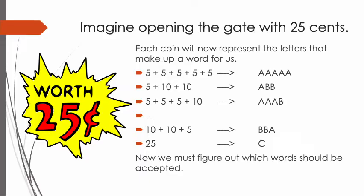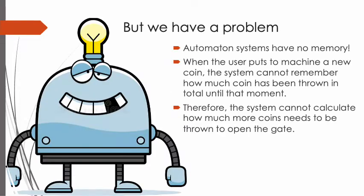Now we must figure out which words should be accepted. But wait — we have a problem. You cannot use traditional programming methods here, because automaton systems have no memory. So you cannot use variables. When the user puts a new coin into the machine, the system cannot remember how much coin has been thrown in total until that moment. Therefore, the system cannot calculate how many more coins need to be thrown to open the gate.